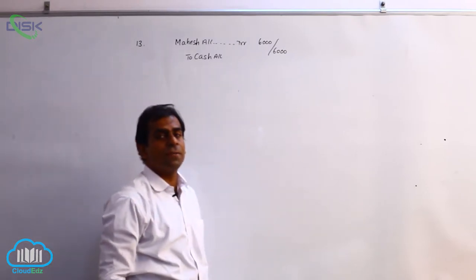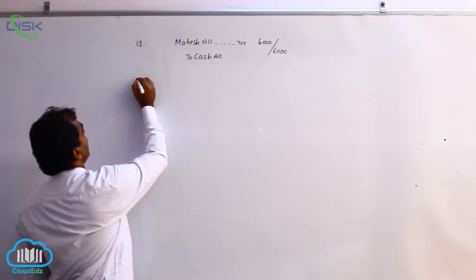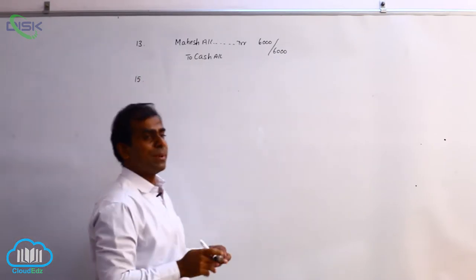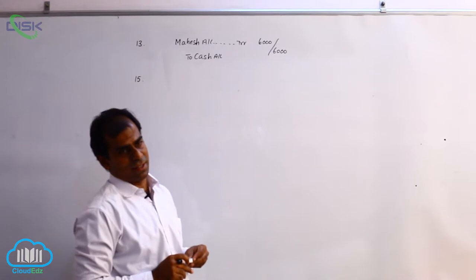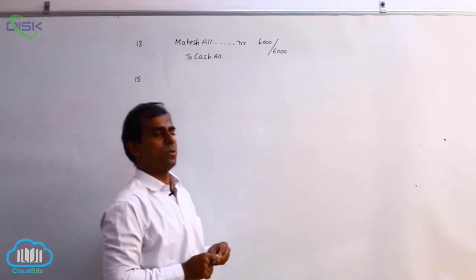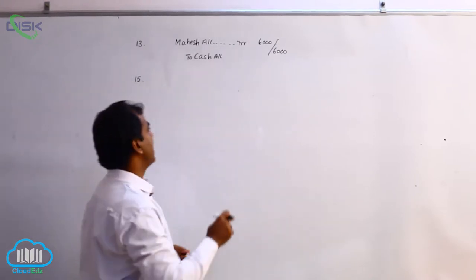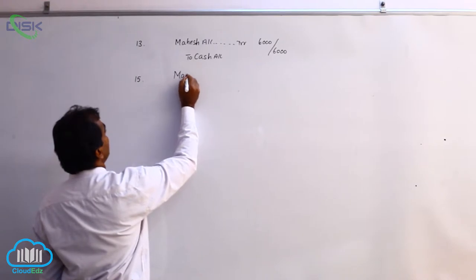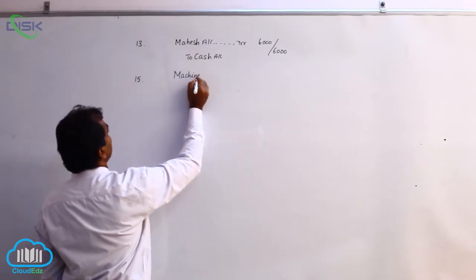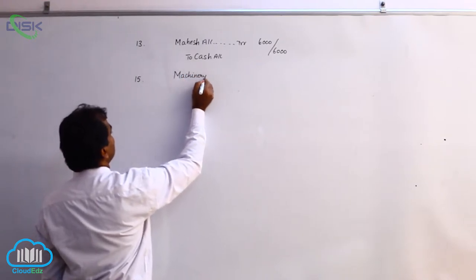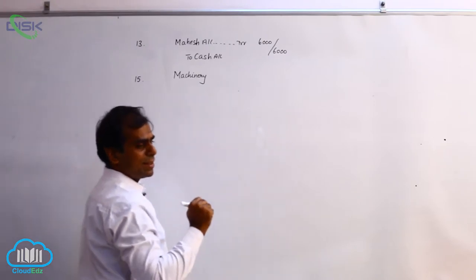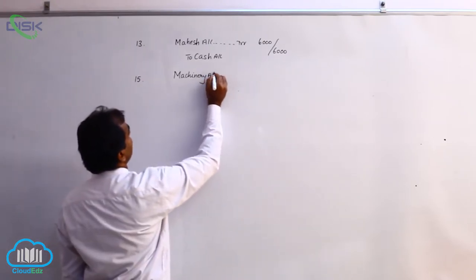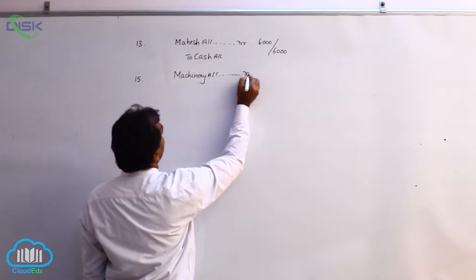The transaction on the 15th is machinery purchased. Machinery is an asset, so we use the word machinery only. Machinery is a real account. When you are buying machinery, machinery is coming in, so the real account rule of debit what comes in applies, and we debit the machinery account.